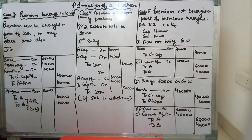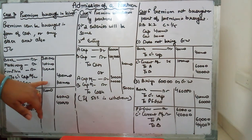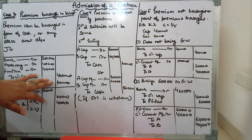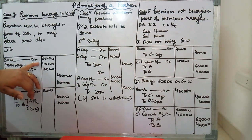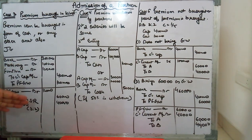Whenever goodwill is brought in kind, the only change is that instead of bank, there will be other assets debited. For example, a partner is admitted and brings four lakh rupees as capital. Out of five lakh total, three lakh is through check, one lakh is machinery, and one lakh is furniture. So in the journal entry, those assets are debited instead of bank. The next entry remains the same — premium is divided and given to old partners in their sacrificing ratio.